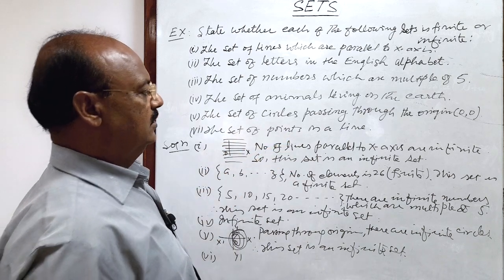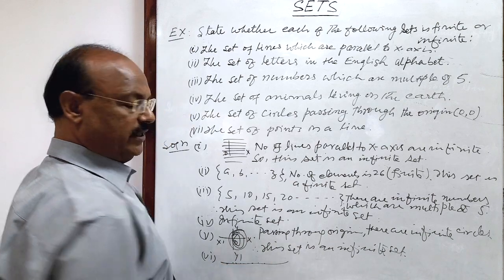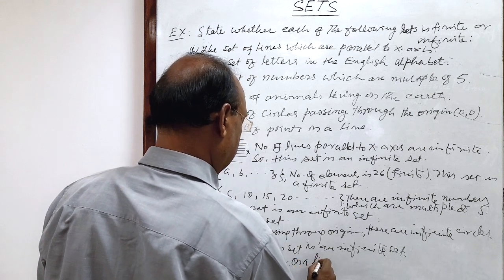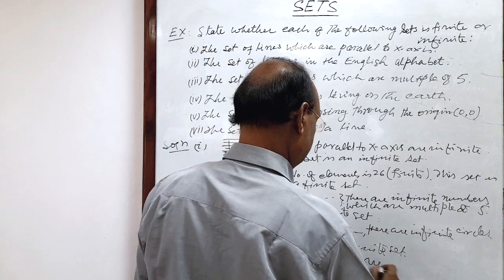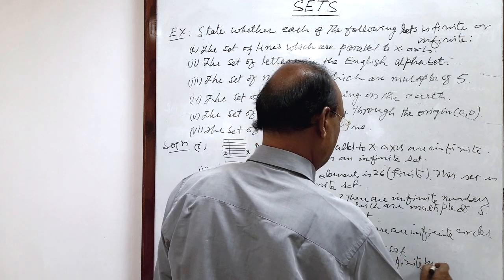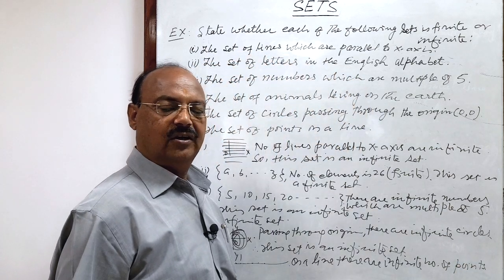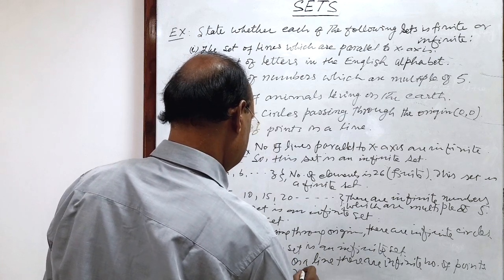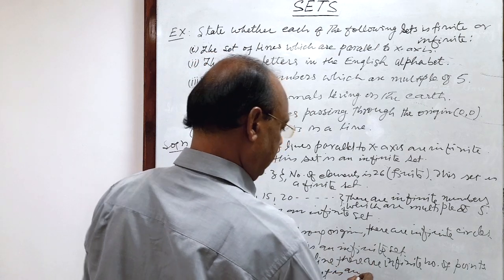Sixth and last question: the set of points on a line. On any line, there are an infinite number of points. So, is this set finite or infinite? Infinite — correct. Therefore, this set is an infinite set.